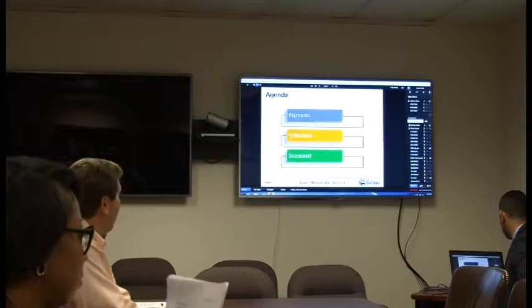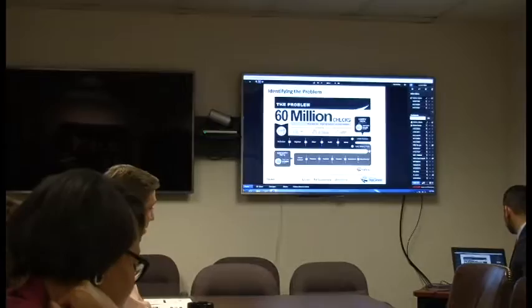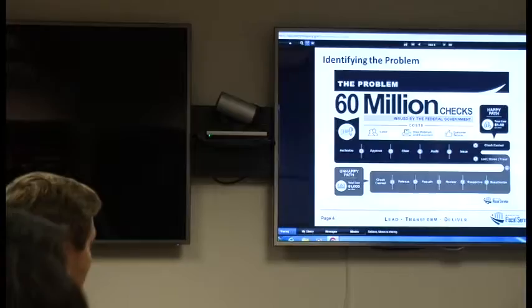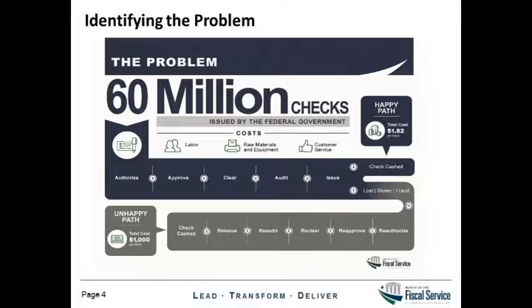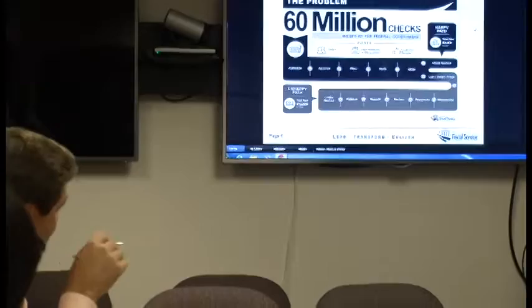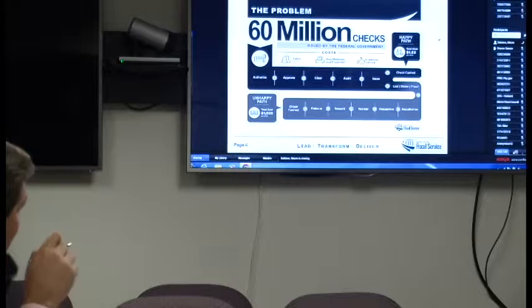My name is Adam Martin. I am a program manager here at the Fiscal Service representing the payment side of the house today. We are piloting with the United States Marshal Service, a service called NTAP. Slide four really illustrates the business problem we face in payments, and that's primarily paper checks. We have issued over 60 million paper checks in total — including tax refunds, SSA, VA, everything. Over 60 million paper checks issued by the Treasury Department, which is very costly and very inefficient. The NTAP service will talk about all the reasons why it's a better solution than checks.